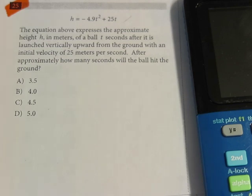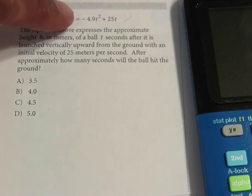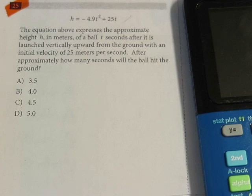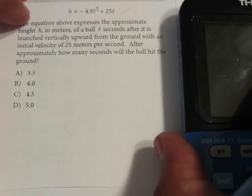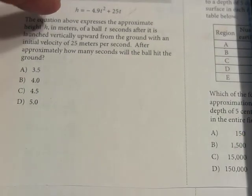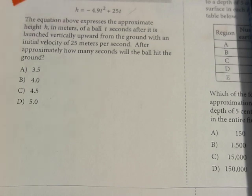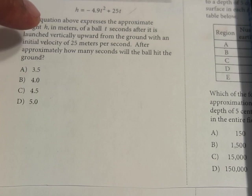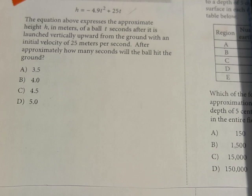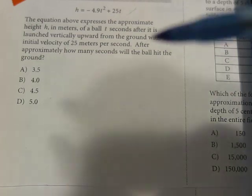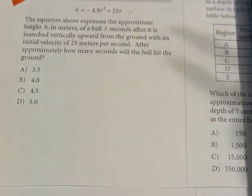So this first one I originally did in the quadratic video where I was demoing the program. One of the things that I mentioned was that because it had a decimal leading coefficient, the other program that I wrote couldn't handle it. So now that I've made changes to it, we can use this program. Let me read this real quick. The equation above expresses the approximate height h in meters of a ball t seconds after it's launched vertically upward from the ground with an initial velocity of 25 meters per second. After approximately how many seconds will the ball hit the ground? So basically what we're trying to determine is when does it hit the ground, we're looking for roots.